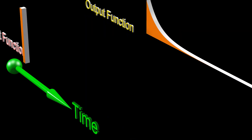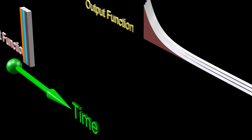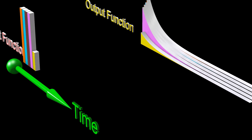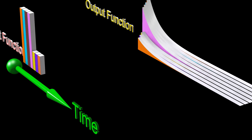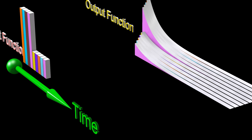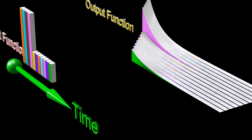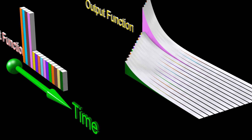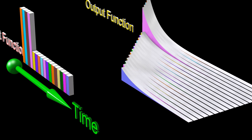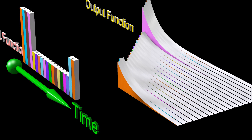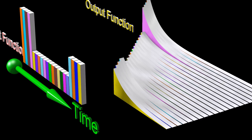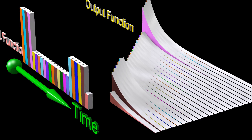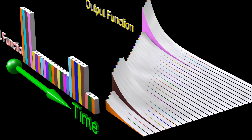Any input to the system can be thought of as an infinite sum of impulse functions. The output of the system can then be thought of as an infinite sum of output functions. Each output function is multiplied by the height of the associated input pulse.